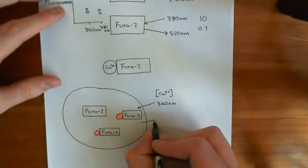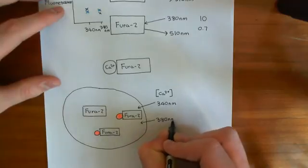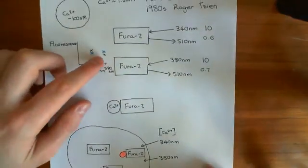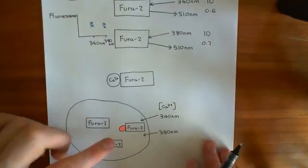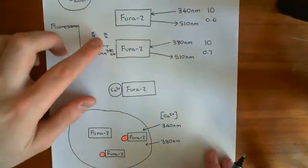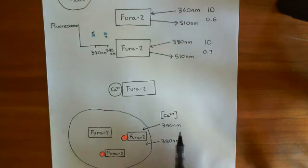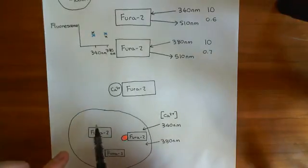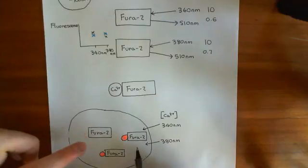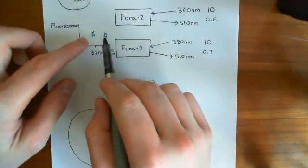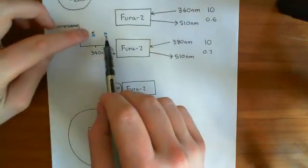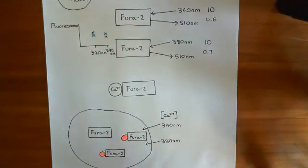Similarly, when you stimulate the cell with 380 nanometer wavelength radiation, the Fura-2 molecules which don't have calcium bound will be fluorescing at the initial amount, and the Fura-2 molecules that are bound to calcium will be fluorescing at a different level. The fluorescence overall will be somewhere in between those two. The more calcium you have, the more it will shift towards the calcium-bound ratio, and the lower the calcium, the more it will go towards the unbound Fura-2 state.